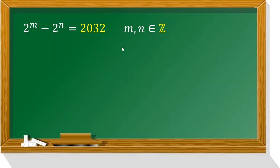2 to the m minus 2 to the n equals 2032, where m and n are integers. We want to find m and n. Let me tell you something, for example, if you say 32 minus 4, then you can factor out 4.